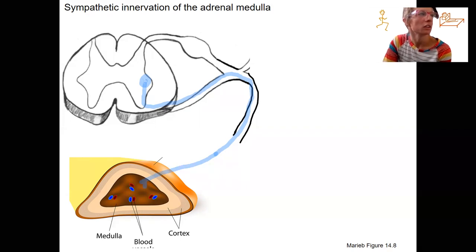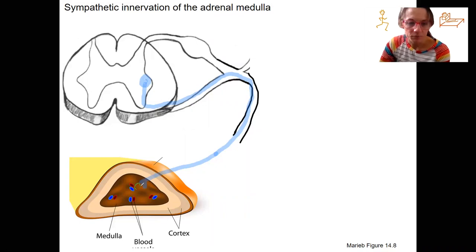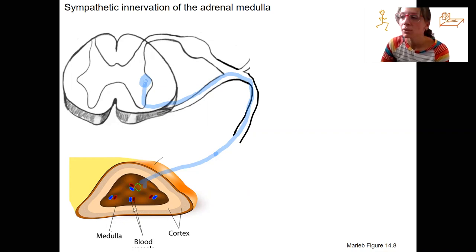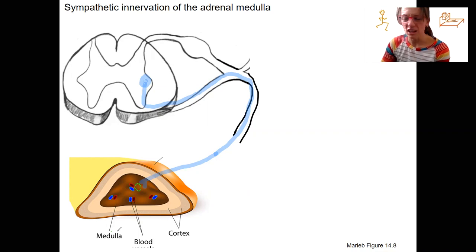I'm going to get a different color for our adrenal medulla cells. The adrenal medulla — medulla means the inside. The adrenal medulla tissue is thought to have developed from the same tissue as ganglia, so it can be thought of as a modified ganglia.